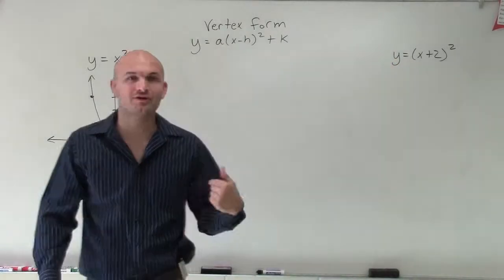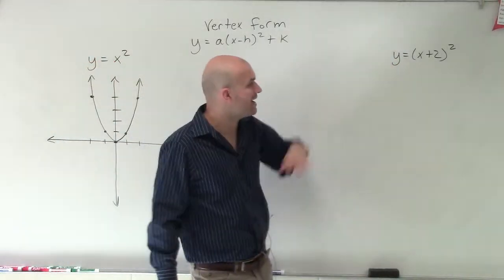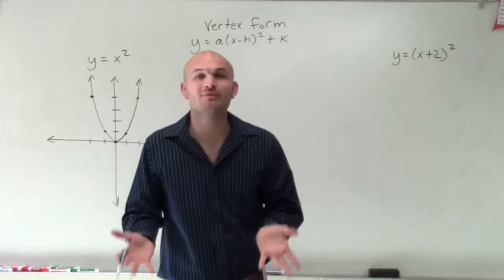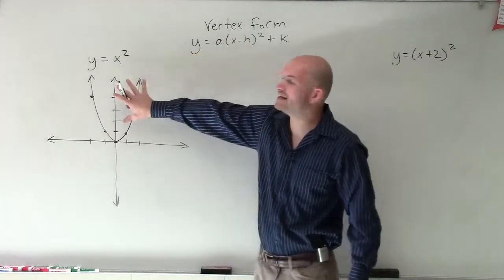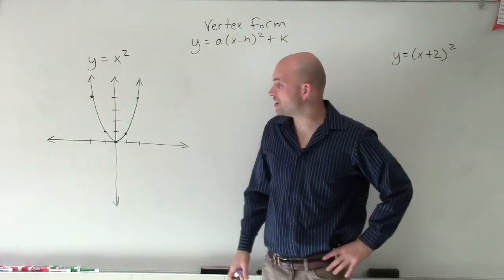So what I have here is an equation in vertex form, and I want to graph y equals x plus 2 squared. What we're going to do is graph this not by creating a table, but just by applying it to our parent graph.